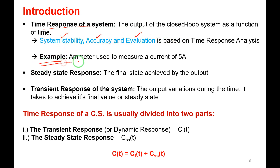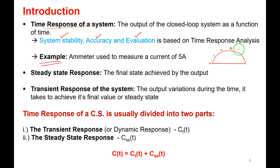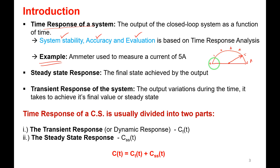Consider an analog ammeter with a calibration scale from 0 to 6 amps. When we use it to measure 5 amps, the pointer starts at 0 and takes some time to reach 5. It passes through 0, 1, 2, 3, 4, and finally reaches 5. Only after some amount of time do we get the reading of the current.